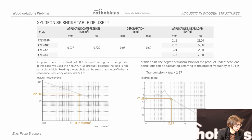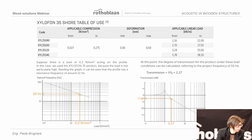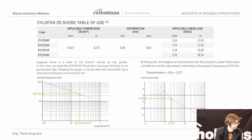Knowing the load — for example 0.2 Newton per square millimeter — we can estimate the natural frequencies. At this point we can divide the design frequency, in this example 50 Hz, by the natural frequencies. With this value, in this case 2.27, we can enter the graph of transmissibility and estimate the acoustic benefit. Sometimes you can find a table of use of the resilient profile, which is defined considering that the profile should work between 20 and 30 Hz, with the applicable compression pre-calculated to guarantee the minimum and maximum values.